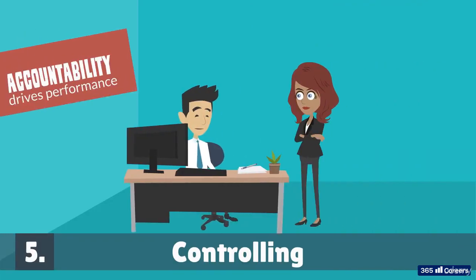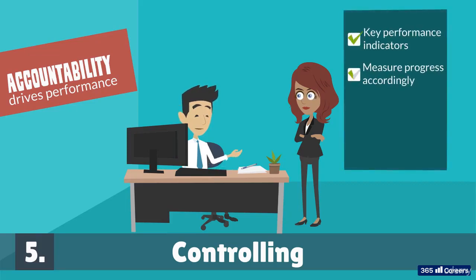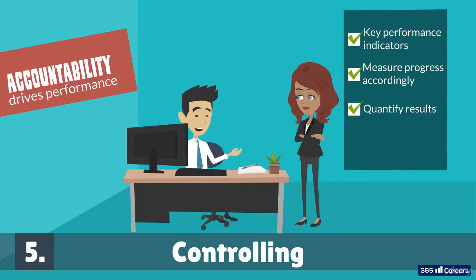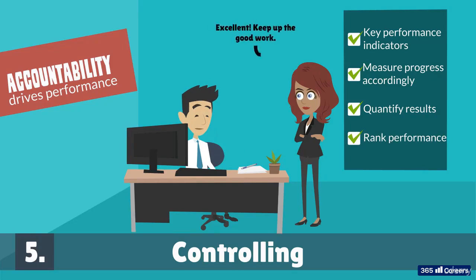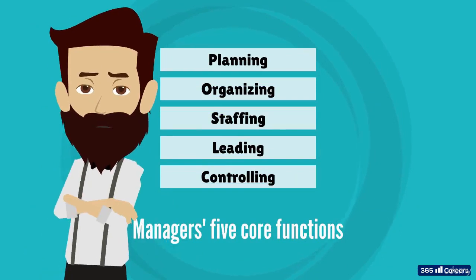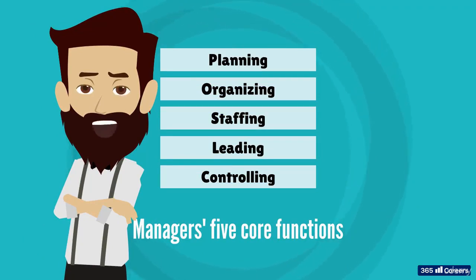Finally, think about accountability — it is one of the main drivers of performance. People can be held accountable for their results by defining key performance indicators and measuring their development. The fifth management function is known as controlling, and comprises quantifying the results obtained by teams and individuals within the organization. In doing that, managers have a valuable tool at their disposal which allows them to rank performance, making it easier to encourage top performance and address underachievement. These are the five core functions managers must address in their job. Depending on where they are in the pyramid structure, the distinct functions may have a different importance, but all managers must deal with these tasks to a certain degree.